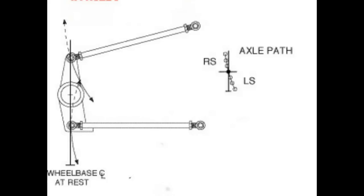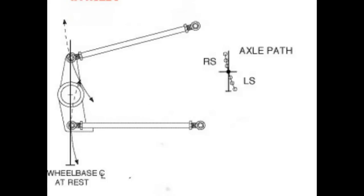Here's a simple drawing of your right rear suspension. This is looking in from the right rear tire into the center of the car. You've got your upper rod, your lower rod, your birdcage. The only thing that's missing is the spring.